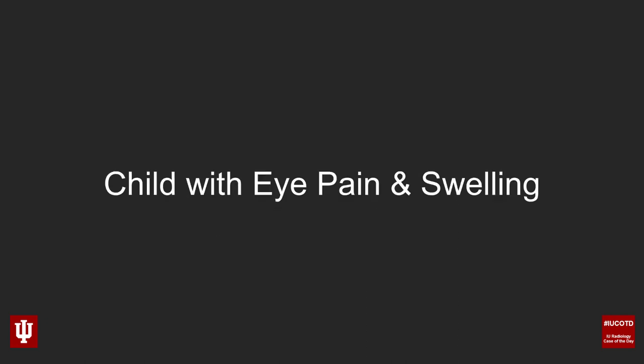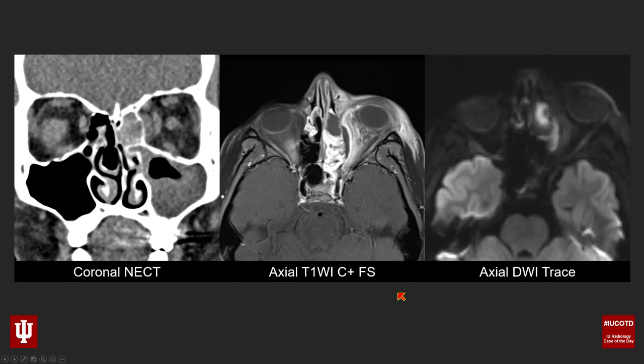The history for this case is a child who presented to the emergency department with eye pain and swelling. I have three images for you to take a look at. The image on the left is a coronal non-contrast CT through the face. The image in the middle is an axial T1 post-contrast image with fat saturation. The image on the right is an axial diffusion weighted image from the diffusion trace sequence. Take a look at those three images keeping in mind this patient who presented with eye pain and swelling.